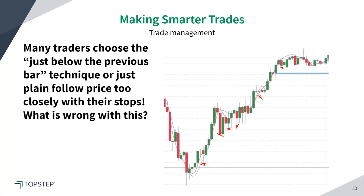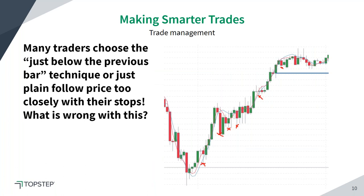That first initial instinct is to bring that stop to break even, but that still leaves risk on the table because at that point we are still paying commissions and fees to execute. If we stay in that trade and let the market continue in a direction, letting that winner run, then you can start to bring those stops up — but put those stops where there are points of invalidation. Once the market has made a new high and come back, you can place stops that lock in good profits while allowing that winner to run.